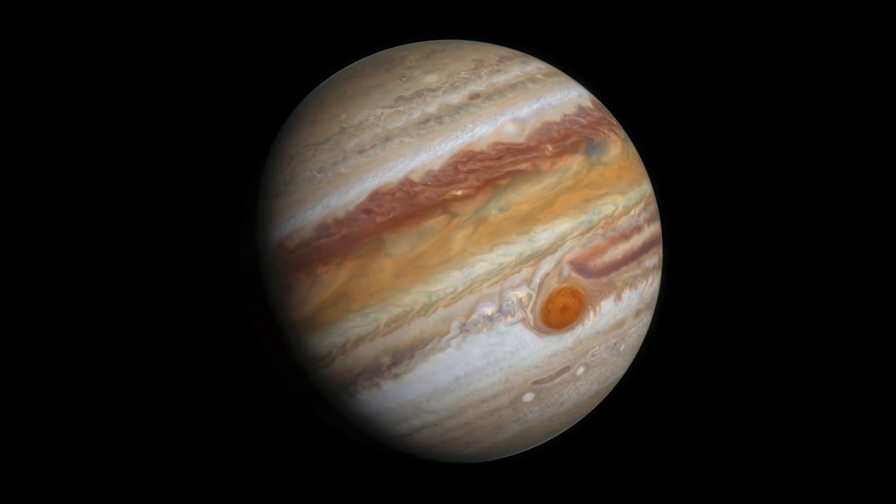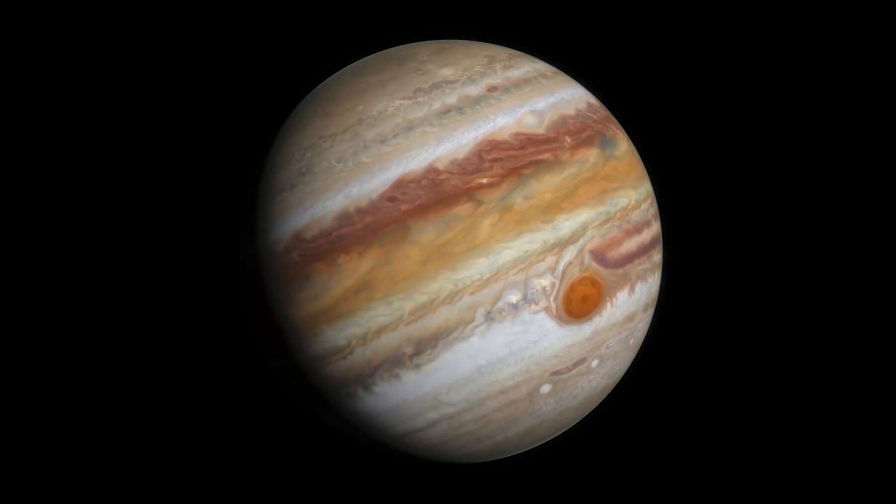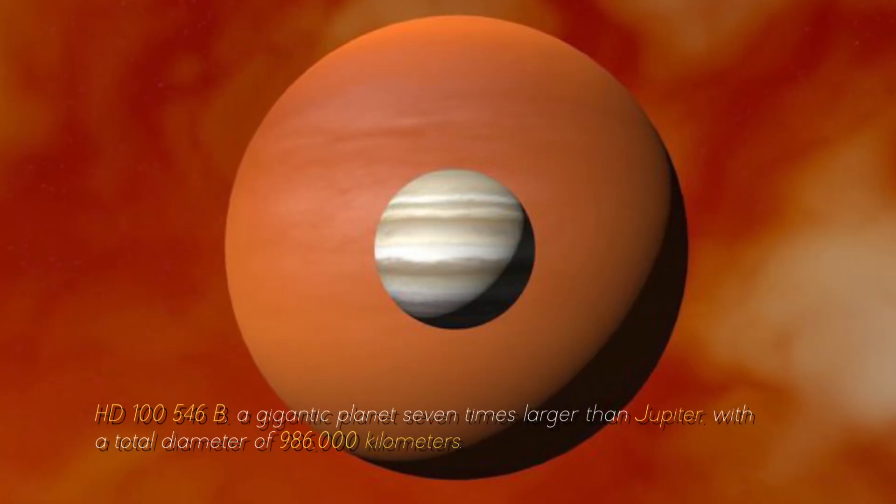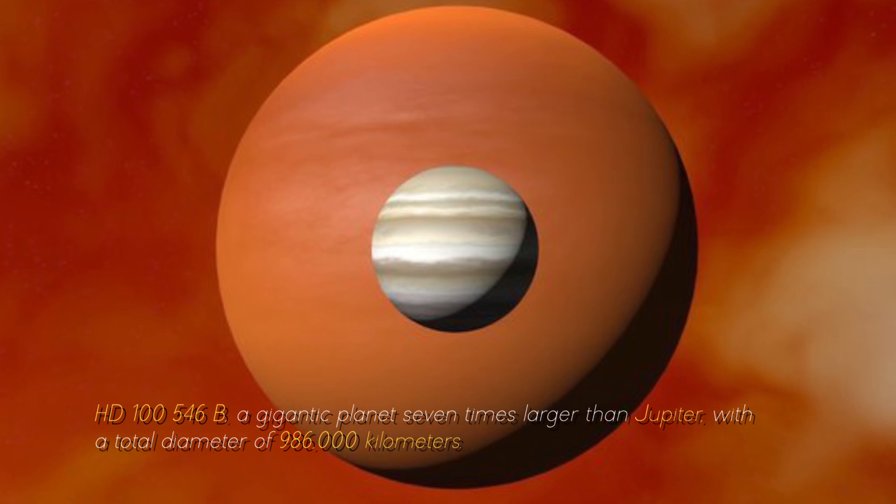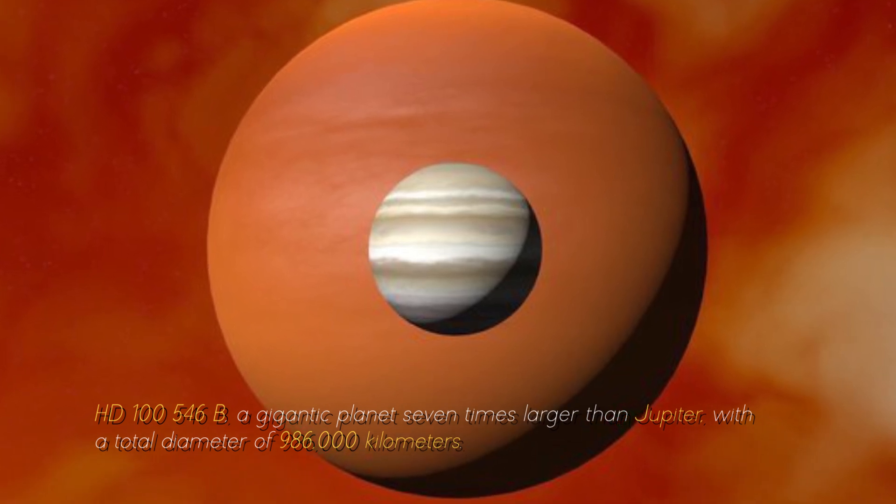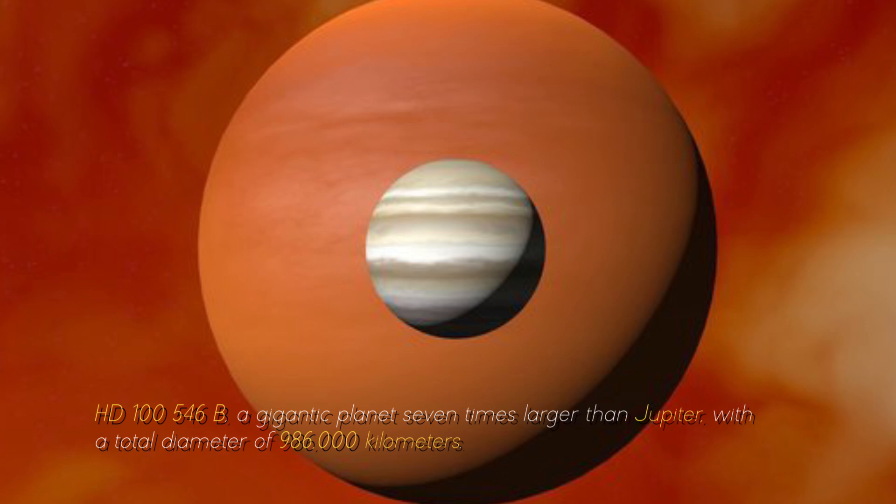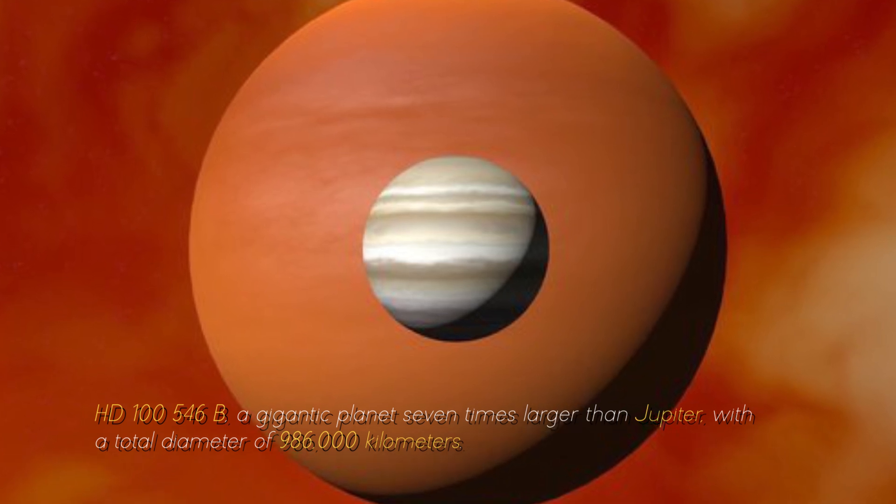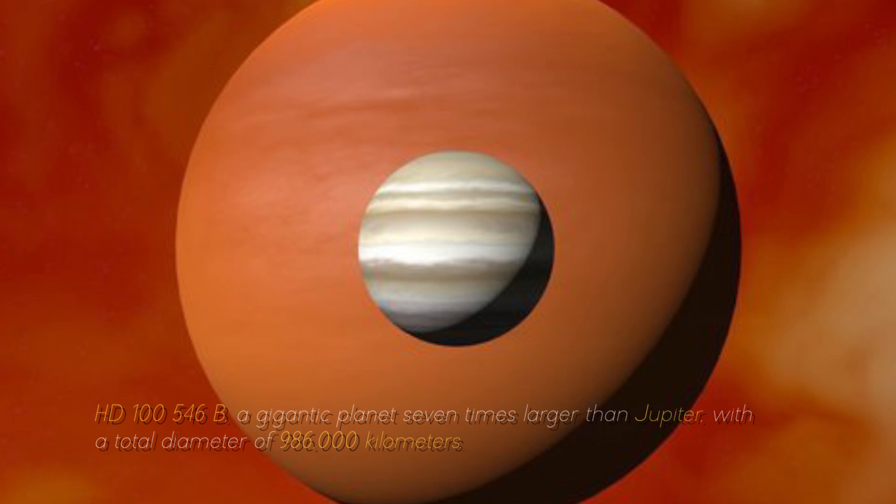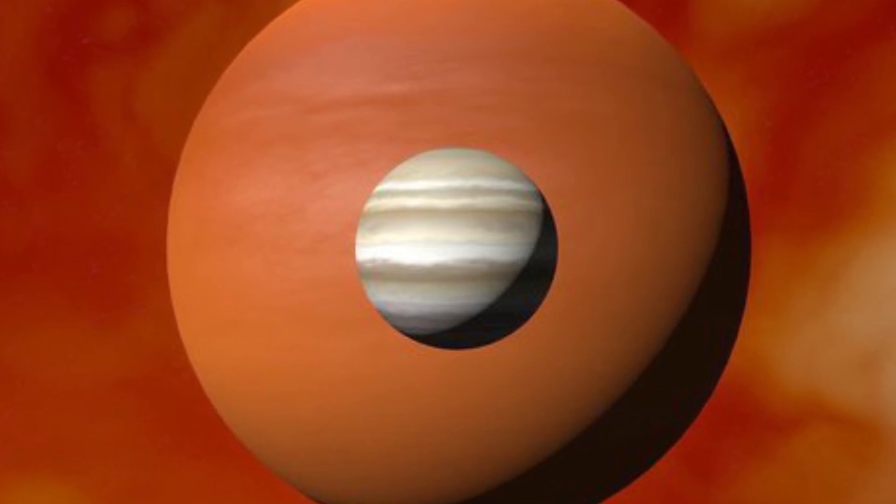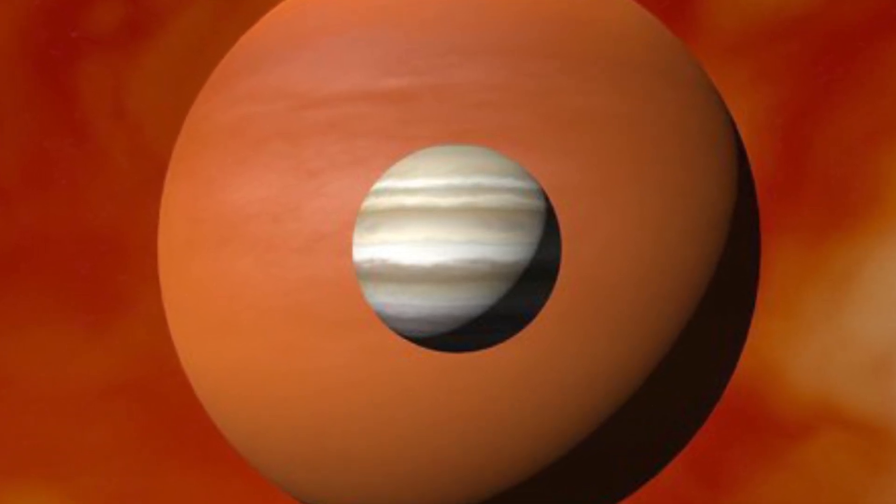Now, let's compare Jupiter with the largest planet in the known universe, HD-10546 b, a gigantic planet seven times larger than Jupiter, with a total diameter of 986,000 kilometers. You can imagine what Earth would look like near this cosmic monster, can't you?